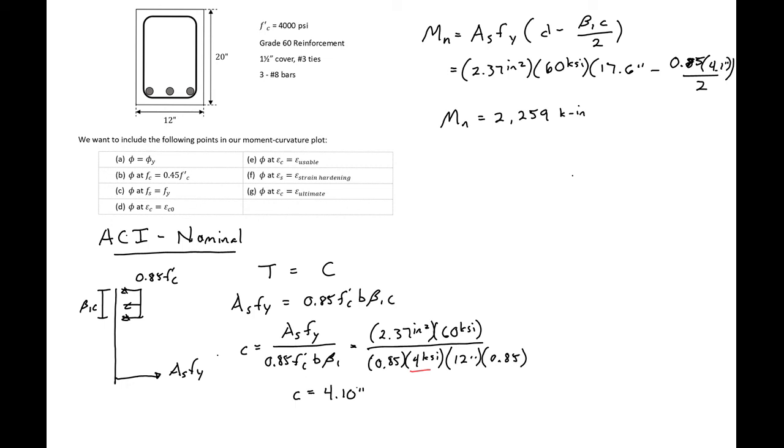Next we can find our nominal curvature. Our nominal curvature will just be our strain at our top fiber divided by c. Remember for ACI, we're assuming a strain of 0.003 at the top, and we found our c to be 4.1 inches. We can calculate our curvature to be 7.32 times 10 to the negative 4 radians per inch.